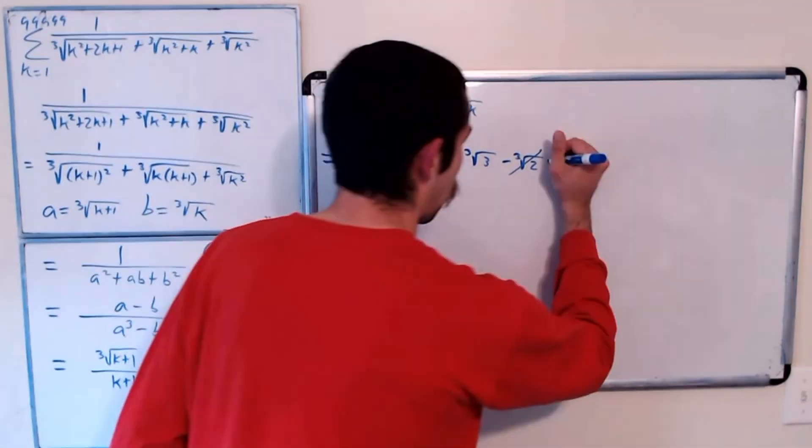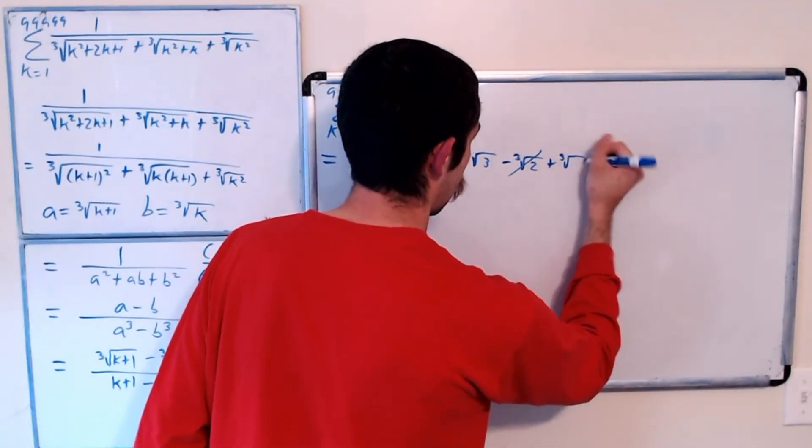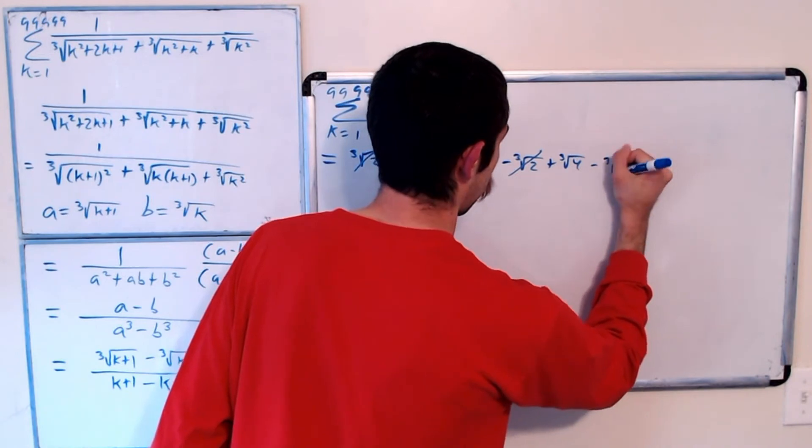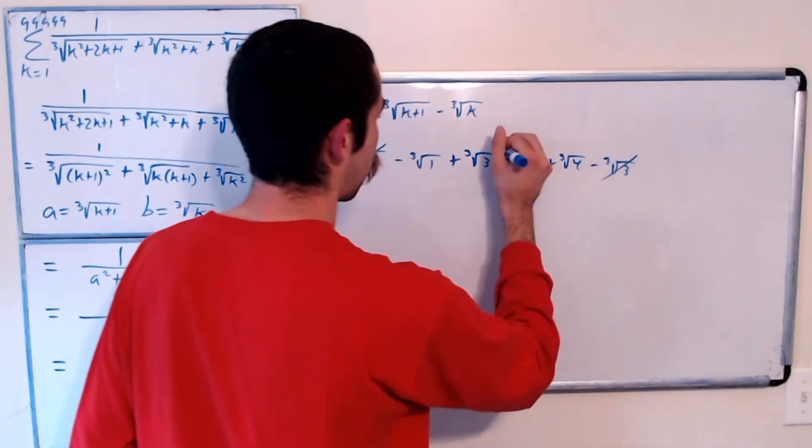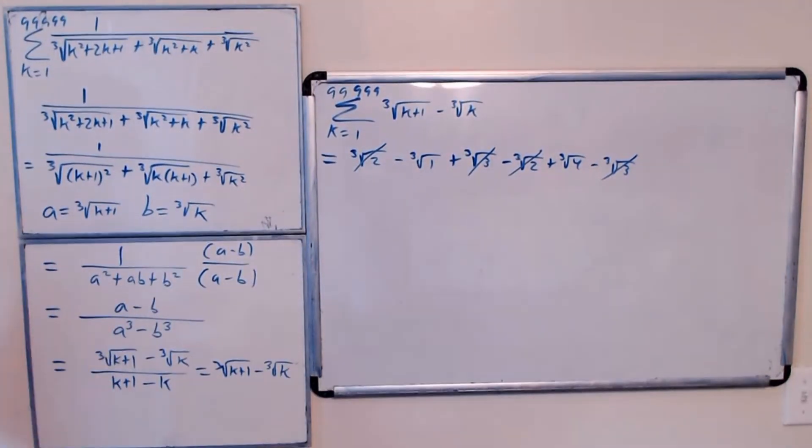The next term would be plus the cubed root of 4 minus the cubed root of 3. Cubed root of 3's cancel. And you could see this goes on forever.